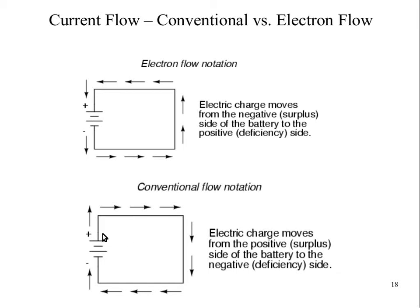Conventional current, though, is said to go from positive to negative. Conventional current came from the fact that Franklin, Benjamin Franklin, guessed as to what direction electric current must flow from a battery.